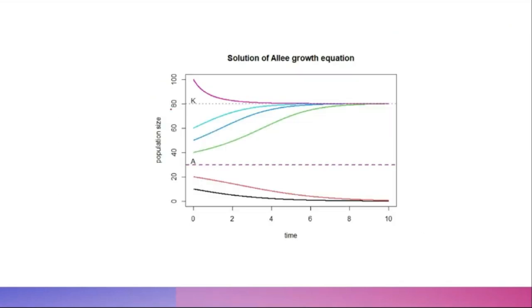The solution structure shows that if the initial population size is below A, the population goes to extinction. If the initial size is above A, the population stabilizes at K in the long run. Simulations using R by solving this differential equation confirm these trajectories — those starting above K settle at the carrying capacity, while those starting below A go extinct.